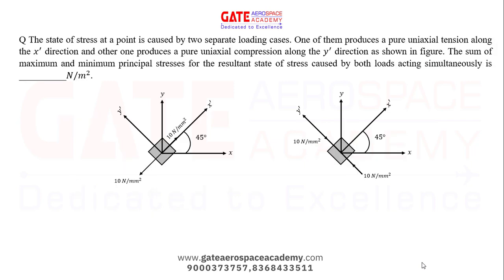The state of stress at a point is caused by two separate loading cases. One produces pure uniaxial tension along the x' direction and the other produces pure uniaxial compression along the y' direction at 45 degrees. When loads act separately: in case one, the principal stress is +10 N/mm², and in case two it is −10 N/mm² due to compression.